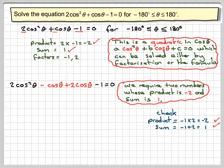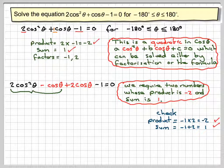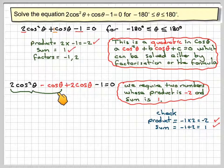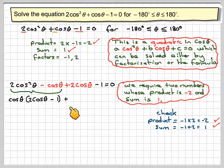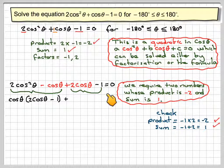And then you do what's known as factorizing by grouping. So you group the first two terms together and you look for the highest common factor. Well, the highest common factor here is cos theta. That comes out and then in brackets you're going to have 2 cos theta minus 1. And then you bring down the sign in front and then you group the last two terms together and you look for the highest common factor.